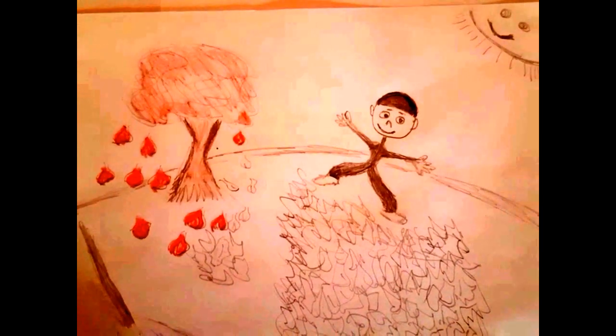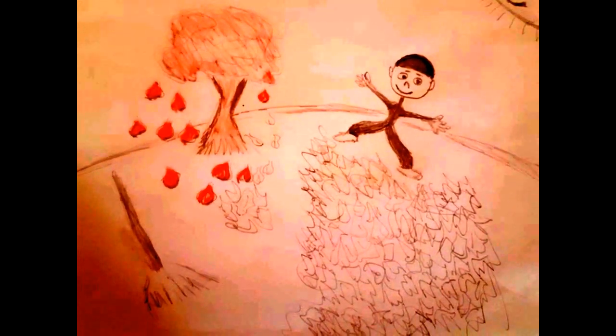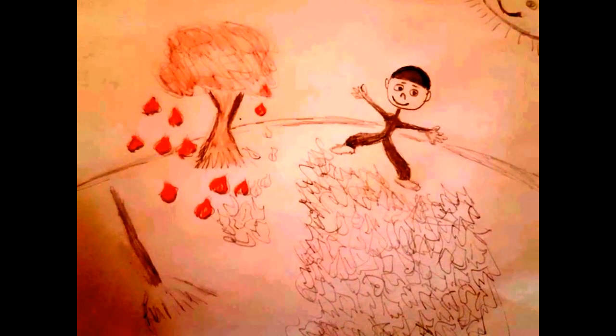James takes a rake and gathers them all. He puts them in a great big pile and runs and jumps in them a while.